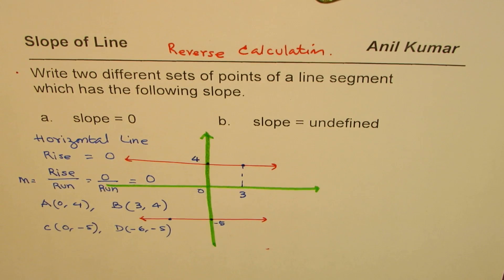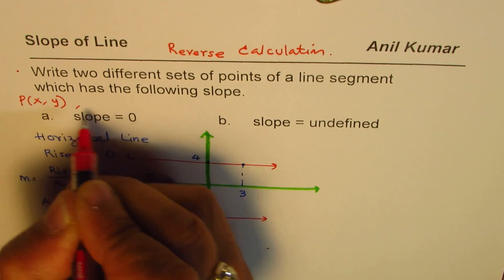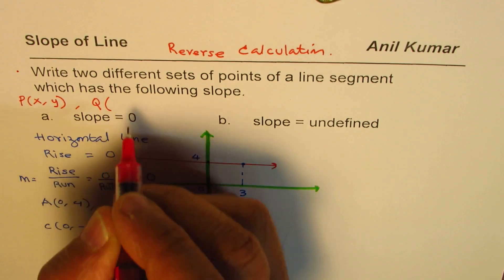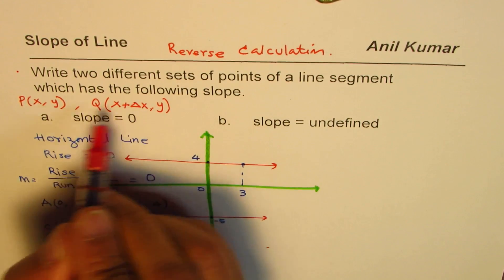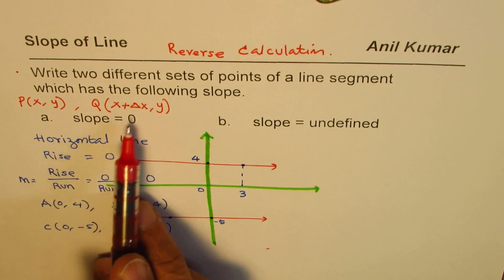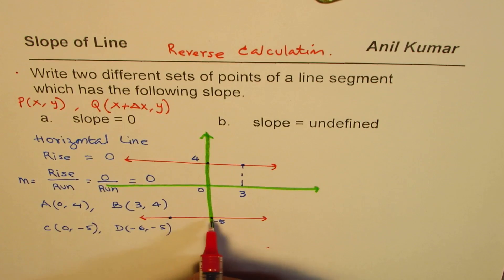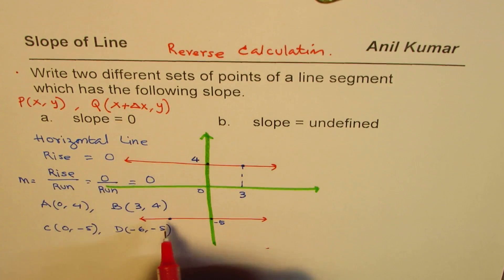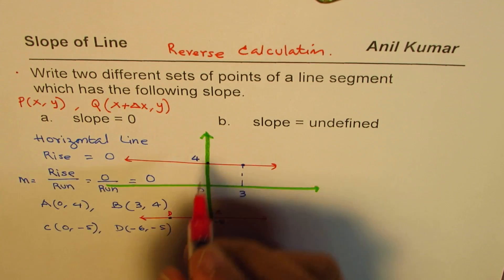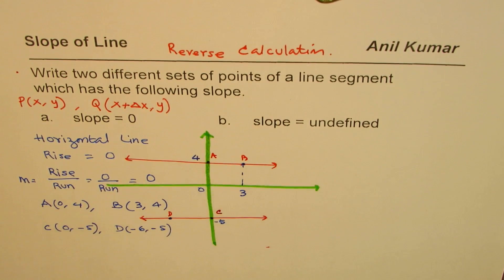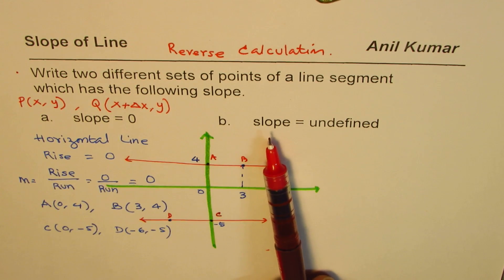In general, I could write a point P which is (x, y) and a point Q which has change in x, but y remains same. That kind of a line will have zero slope, and you can find many points using these two sets of points. When I join them with endpoints it becomes a line segment. C and D becomes a line segment; A and B becomes a line segment. I hope the concept is clear and now you can definitely write down set of points where the slope is undefined.